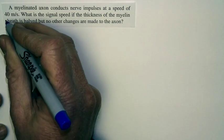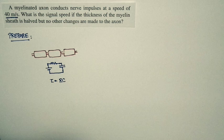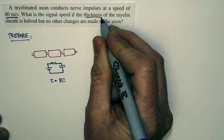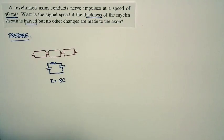Now we're told the axon can transmit signals at 40 meters per second. And we want to know how that will change if the thickness of the myelin sheath is halved. Well, how does that change things?